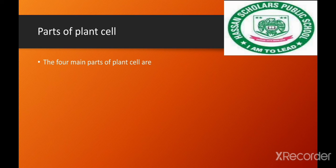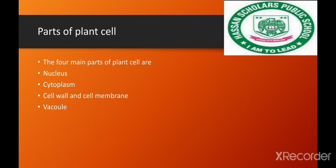The four main parts of the cell are the nucleus, cytoplasm, cell wall, cell membrane, and vacuole. These are the four important structures in the cell. Thank you.